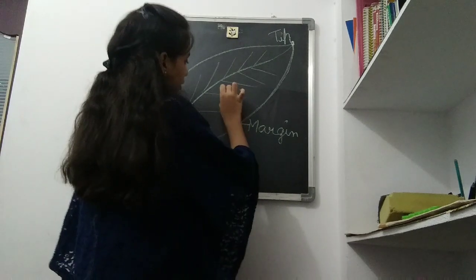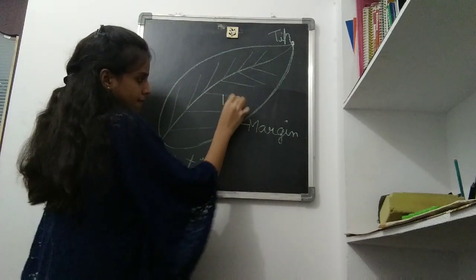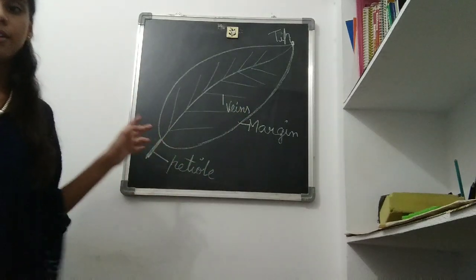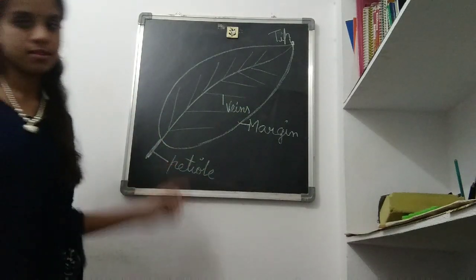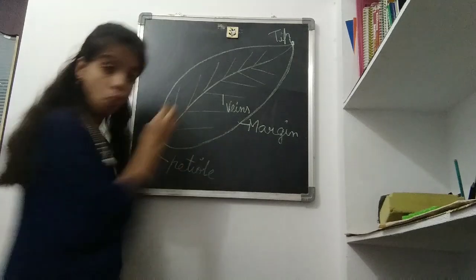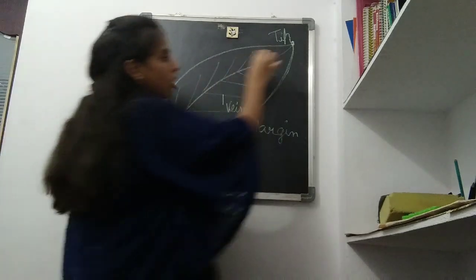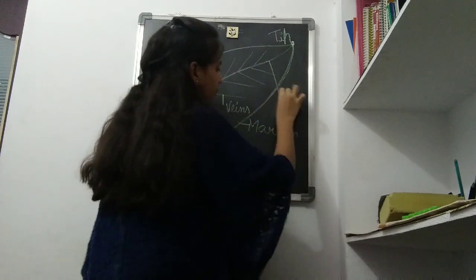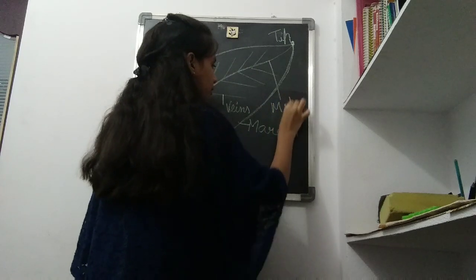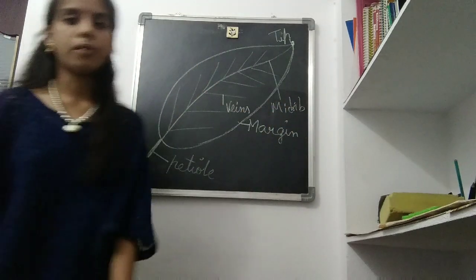And these are veins. We also have veins. And this middle line which is joining the bottom to the top is called the mid-rib. The mid-rib.